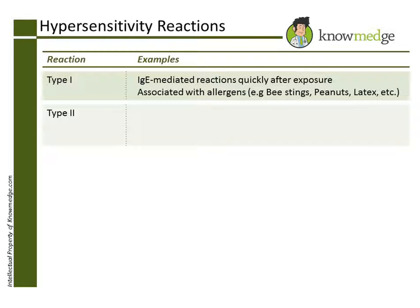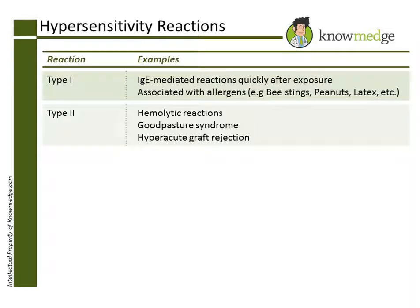Some examples in the Type 2 category include hemolytic reactions, Goodpasture syndrome, and hyperacute graft rejection.